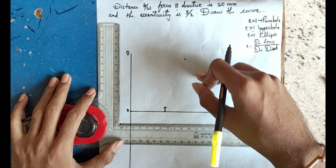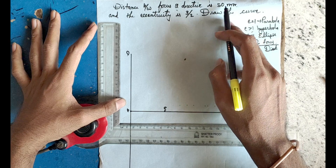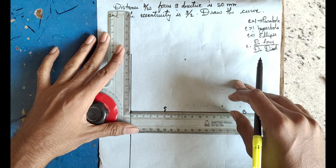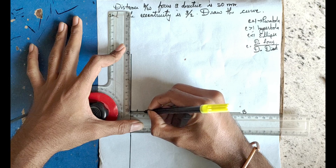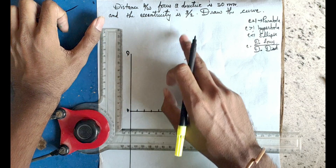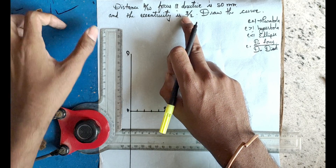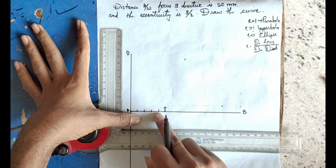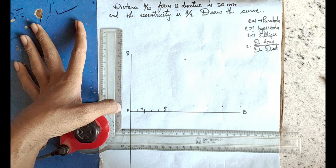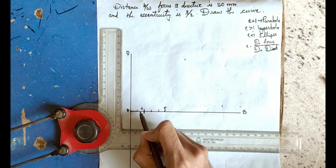Total parts are 3 plus 2 equals 5. So 50mm divided by 5 is 10mm — each part is 1 centimeter. So we mark 1, 2, 3, 4, 5 parts. Eccentricity is 3 by 2, so from focus we count 3 parts: 1, 2, 3 — this is the V point. From directrix, 2 parts.